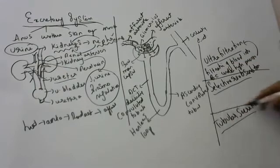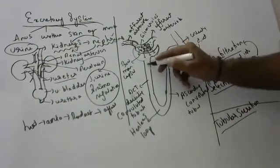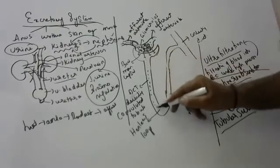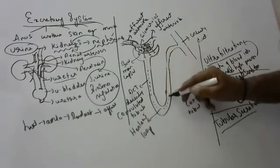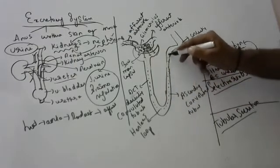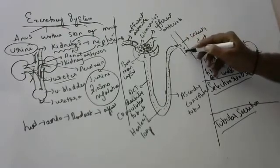Now children, the blood goes like this, like this, like this - through the tubule - and by the time it comes out here, it will have become clean and blue.